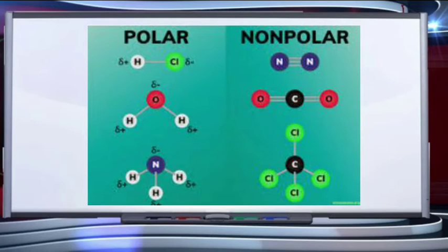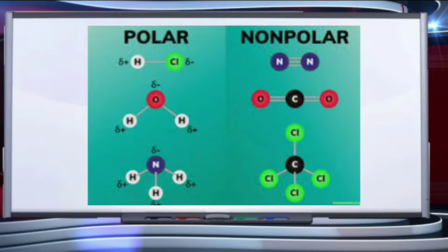For polar molecular solids, three examples are HCl, water, and ammonia, which are formed by polar covalent bonds. For nonpolar molecular solids, they can be made up of atoms like argon and helium, or molecules like nitrogen, carbon dioxide, and carbon tetrachloride, which are formed by nonpolar covalent bonds.